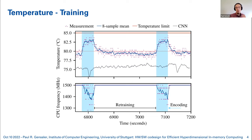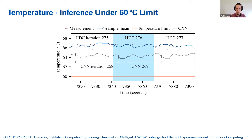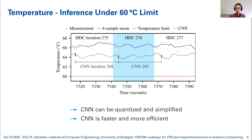Reducing the limit to 60°C — a more realistic wearable threshold — causes the CPU to constantly throttle to just 600 MHz, and both algorithms exceed the 60°C limit. HDC exceeds it even further. While CNN and HDC have similar throughput in images per second, the CNN can be further improved by quantization and architecture simplification, achieving significantly more images per second, reduced power consumption, and reduced temperature. This demonstrates that off-the-shelf software solutions make HDC less thermally efficient than CNNs for this dataset.